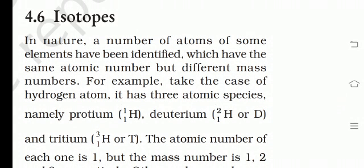In nature, a number of atoms of some elements have been identified which have the same atomic number but different mass number. Hamare nature mein jo elements hain, unka same atomic number hota hai but different mass number hota hai. For example, take the case of hydrogen — it has three atomic species.